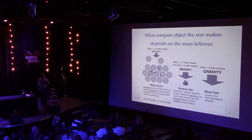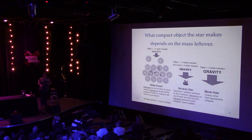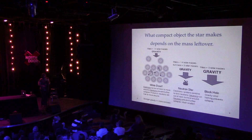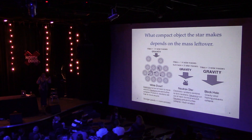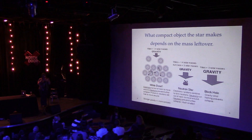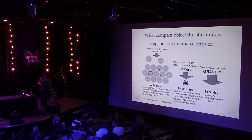White dwarfs have about the same mass as the Sun but the same size as the Earth. Take that one step further — higher mass, stronger gravity, more compression — and you end up with a neutron star, where protons and neutrons have fused together into neutrons. You have a giant ball of neutrons, held up by the rigidity of a neutron instead of an electron. These objects are about one and a half times the mass of the Sun.